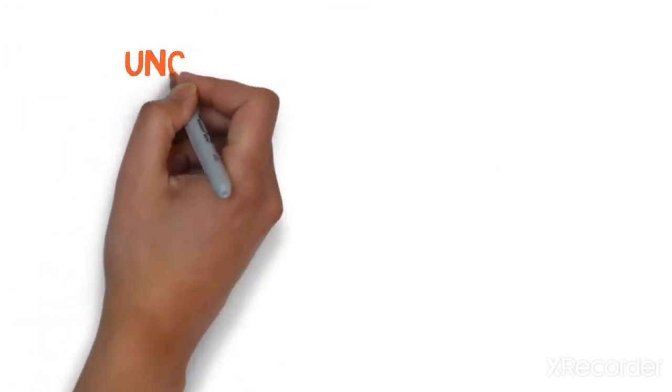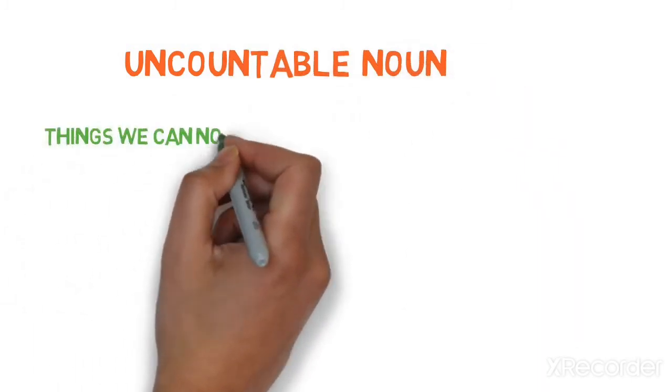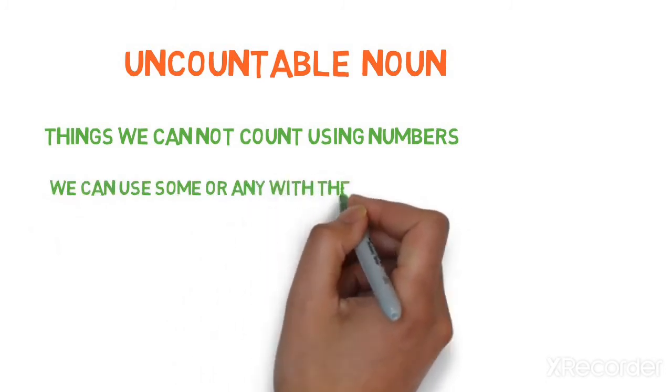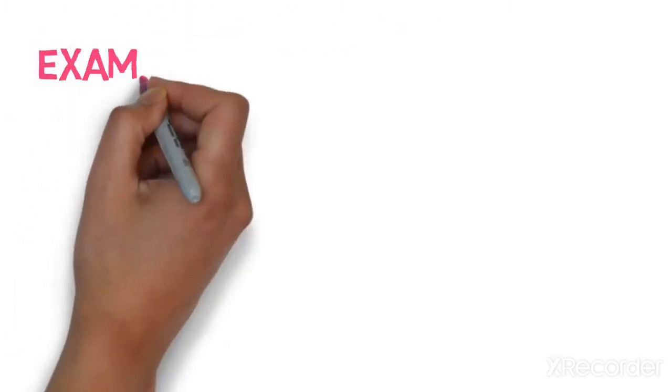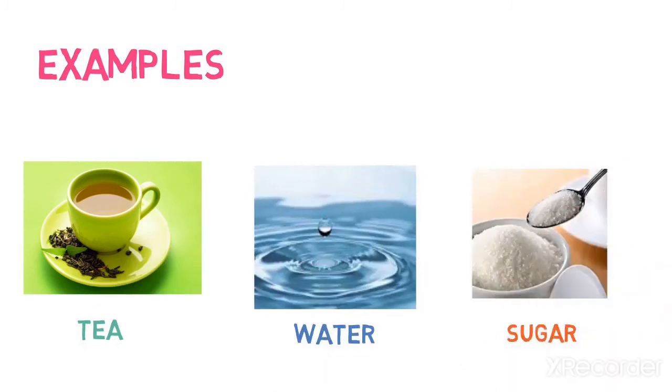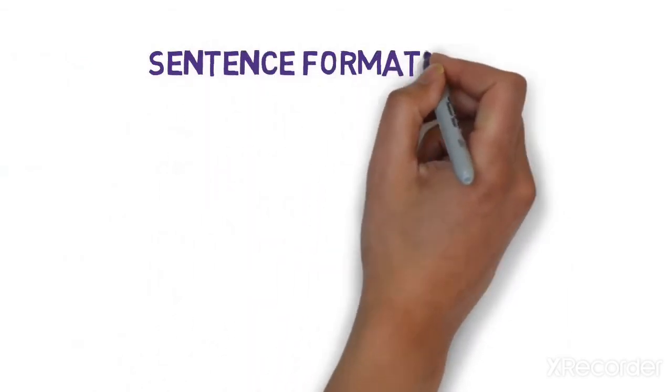Now let's look into another category of nouns, that is uncountable nouns. Things that we cannot count with numbers are categorized as uncountable nouns. We can use some or any with them. They usually do not have any plural form. Examples: tea, water, and sugar. You can see in the example you cannot count water, you cannot count tea, or you cannot count sugar. So they come in the category of uncountable nouns.